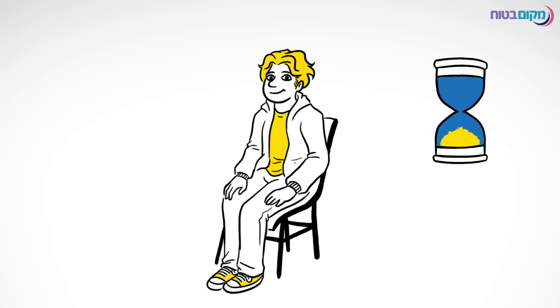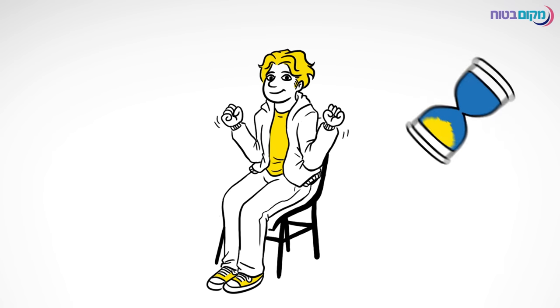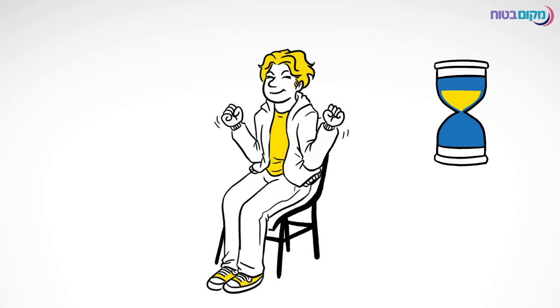Now let's continue with the arms. Bend your arms against your body and contract the muscles. Count down 5 seconds. 5, 4, 3, 2, 1. And relax.